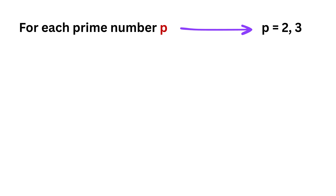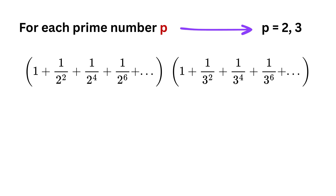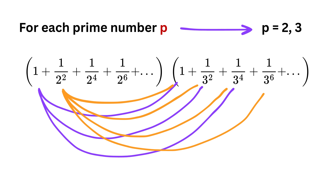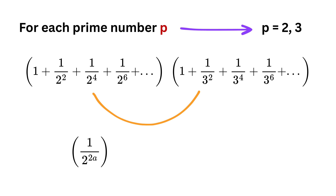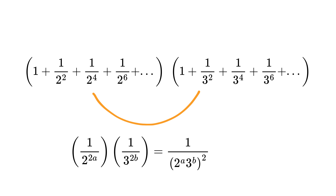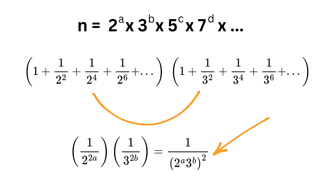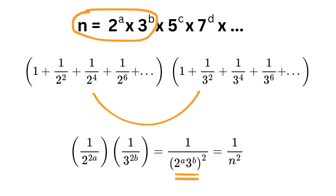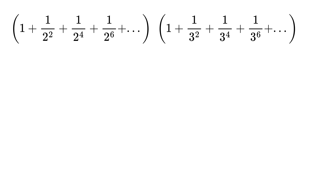To make the explanation simple, just take prime numbers two and three, write their geometric series, and multiply them together. When we expand this product, we form all pairwise products — one term from the first series and one from the second. Each product has the form one divided by two to some power a, multiplied by one divided by three to some power b, which becomes one over two to the power a times three to the power b, all squared. By the fundamental theorem of arithmetic, this equals one over n squared, where n equals two to the power a times three to the power b.